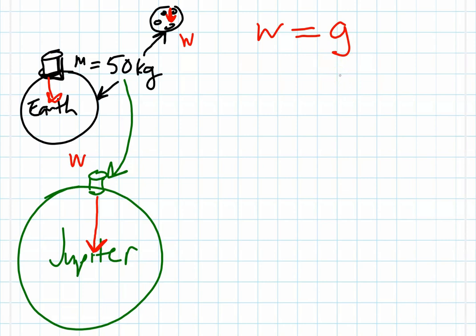Of course, in this class of physics, we tend to use Earth as our frame of reference more often than not. So anytime it's not stated in a problem where you are, you can always assume Earth.